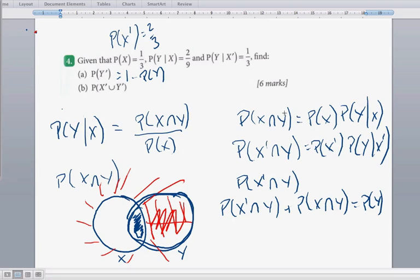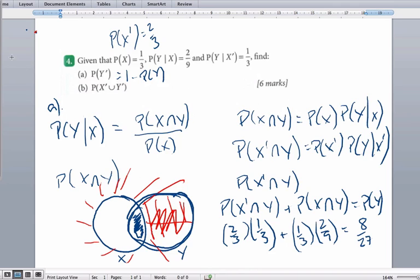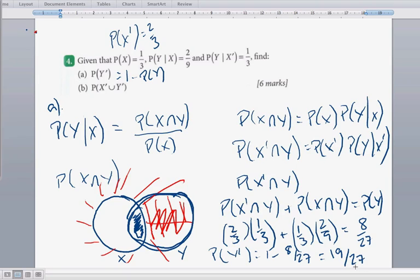Not X and Y is going to be 2 thirds times 1 third. So this is 2 thirds times 1 third from here and my values. X and Y is going to be the probability of X, which is 1 third times Y given X, which is 2 ninths. And if I crunch through all that arithmetic, I end up with 8 over 27. Before I move on to the part, this is the probability of Y. I want not Y. So what that means is if I want the probability of not Y, probability of not Y is just going to be 1 minus 8 over 27, which is going to be 19 over 27 is what I'm looking for.